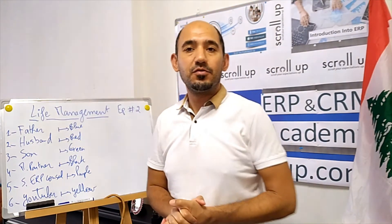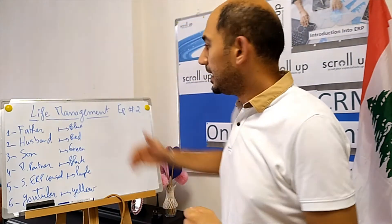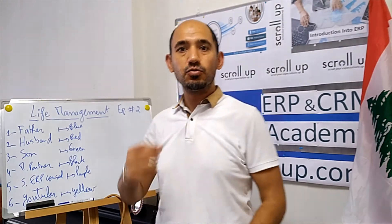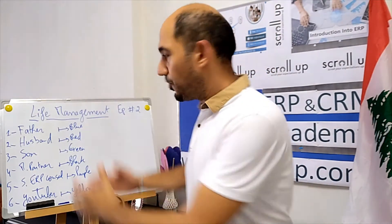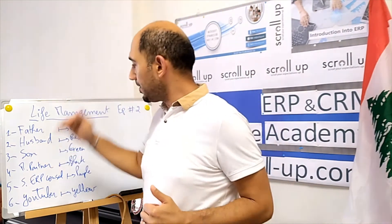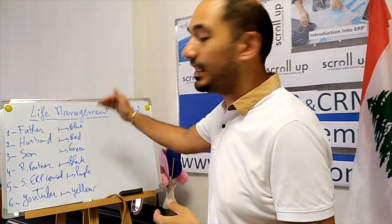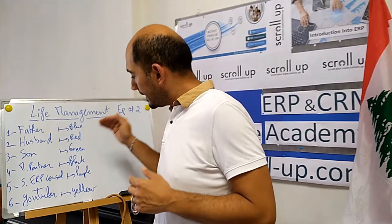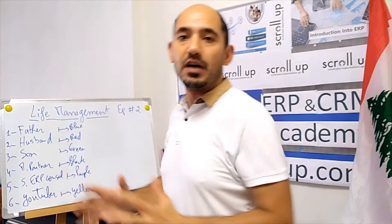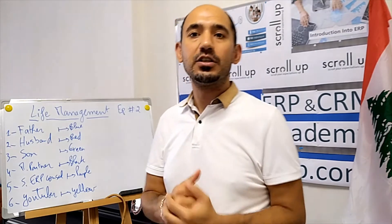Hello, and welcome to the second episode of the life management course. We are going to continue from where we stopped last time. In brief, we saw that the first step toward doing good life management is to define your roles in your life. For me, I'm currently playing six roles, and every stage or age in your life will bring different roles.